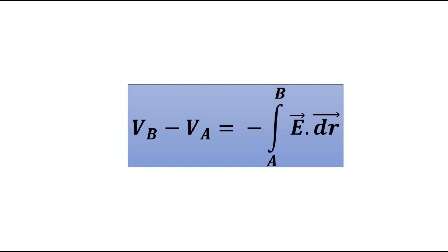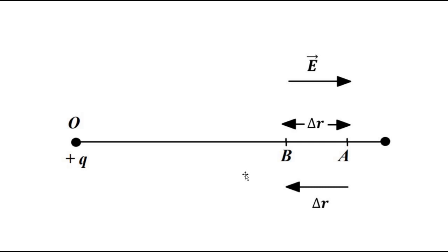Here we will take that discussion a little bit forward. Let us say we have a source charge plus Q located at O. The potential difference between points A and B is basically the work done in moving a unit positive test charge located at infinity from A to B. That is the whole concept of electric potential — the work done in moving a unit positive test charge from infinity to that particular point.